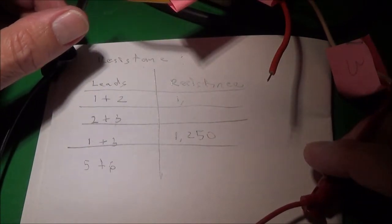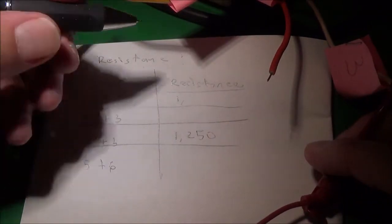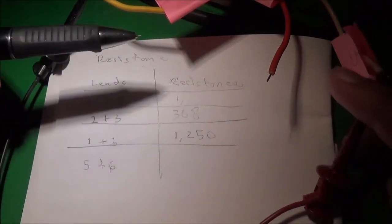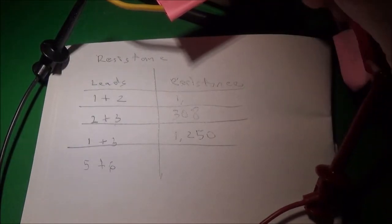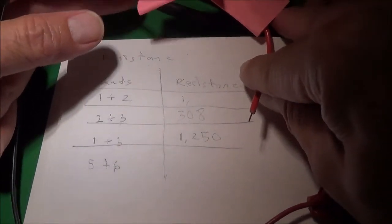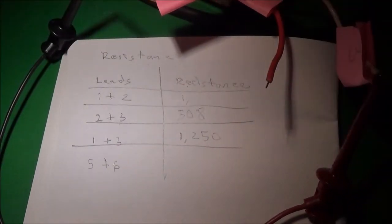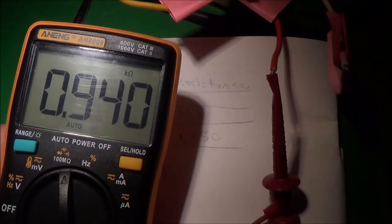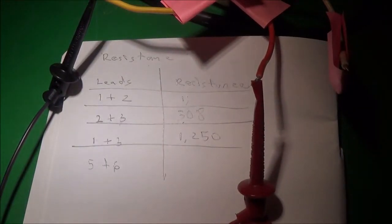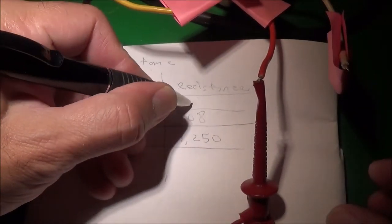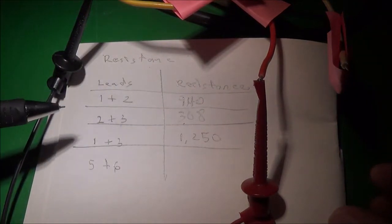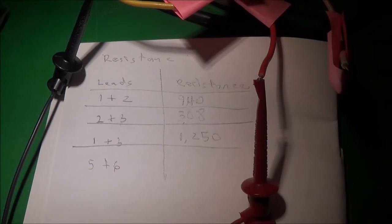Next I'm doing between two and three, which will be the white and the yellow. Okay, so that was 308 ohms. And then we'll go ahead and measure between one and two, which would be between the yellow and the red. So we're measuring between the yellow and the red. And it comes out to 940 ohms, about.